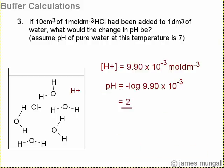So to work out the pH, we do pH equals minus log of H+ concentration, so minus log of 9.90 times 10 to the minus 3, which gives a value of 2.